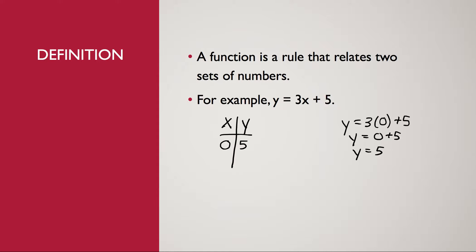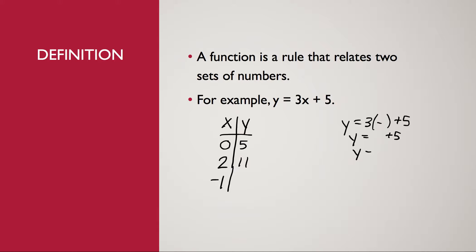Then what if I pick positive 2? If I come over and I take my equation and in place of the x I put a 2, then 3 times 2 is 6, plus 5 is going to be 11. And then let's do a negative. Suppose that I chose negative 1 for my x value. So I would put a negative 1 in for the x in the equation. 3 times negative 1 is negative 3. When I add it to 5, I'm going to end up with 2.